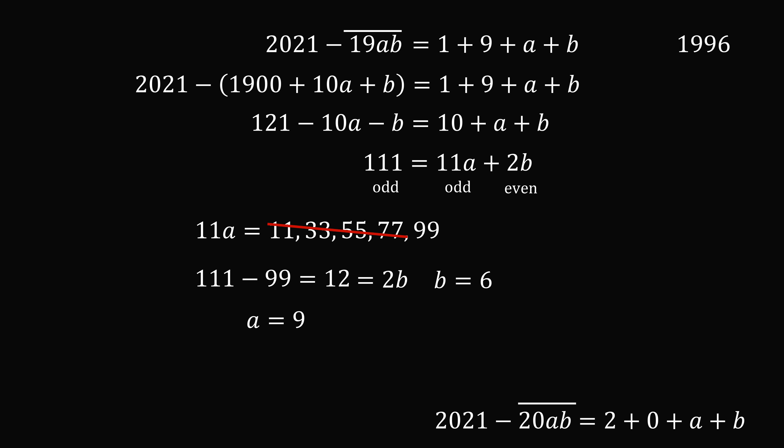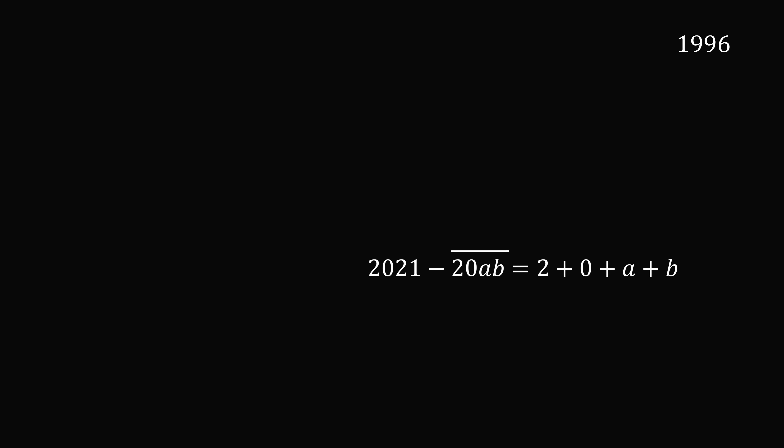So, now let's work the other case that you were born in the 2000s. It will be a very similar calculation. 20ab is equal to 2000 plus 10a plus b. We simplify the right-hand side. 2 plus 0 is equal to 2. So, we have 21 minus 10a minus b is equal to 2 plus a plus b. Again, we bring the constant terms to the left-hand side, and the variables to the right-hand side. So, we have 19 is equal to 11a plus 2b.